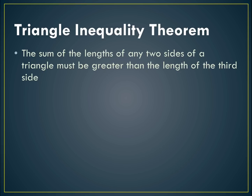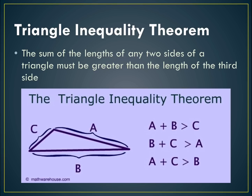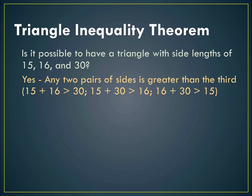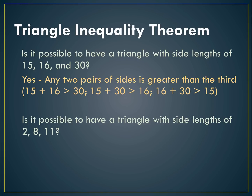Now the triangle inequality theorem. This theorem says that the sum of the lengths of any two sides of a triangle must be greater than the length of the third side. So if I add any two sides of a triangle, it has to be more than the third side. Is it possible to have a triangle with side lengths of 15, 16, and 30? Yes — all three pairs are greater than the third. How about side lengths of 2, 8, and 11? It's not possible, because 2 plus 8 is not greater than 11. You only need to provide one counterexample.